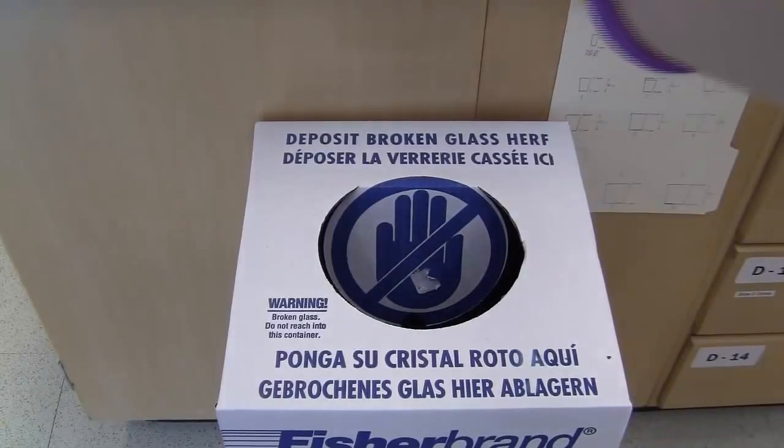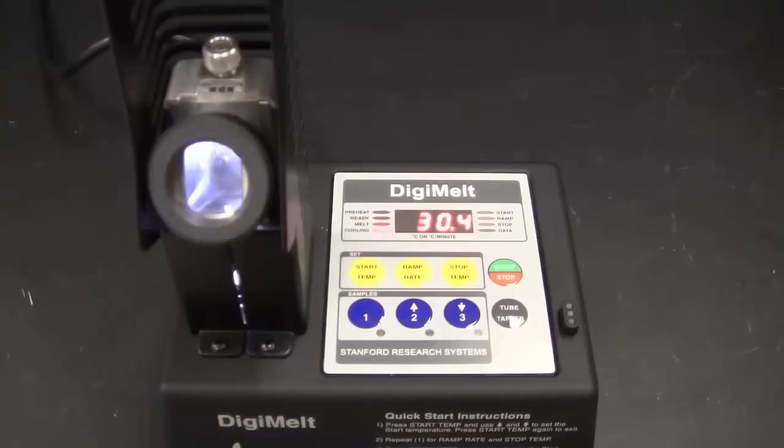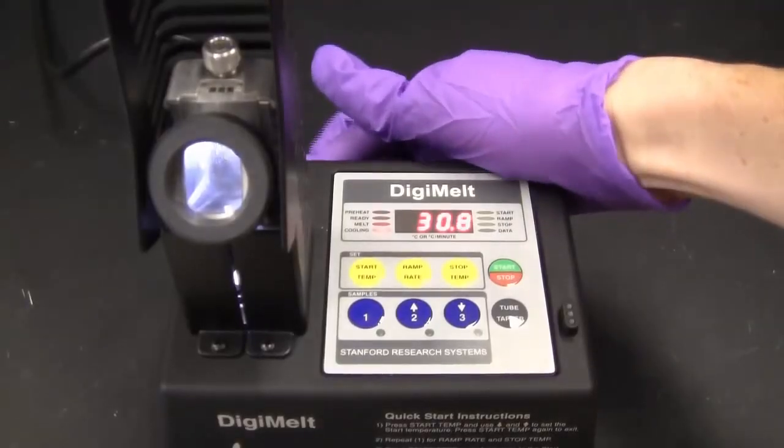Dispose of used capillary tubes in the broken glass container. Remember to turn off the Digimelt if you are the last group to use it.